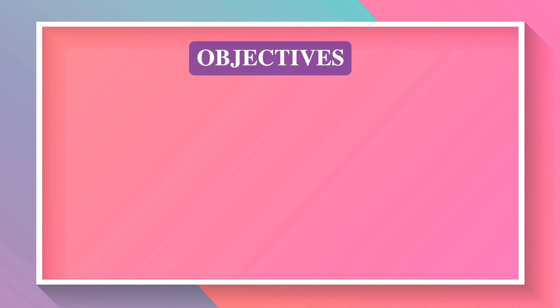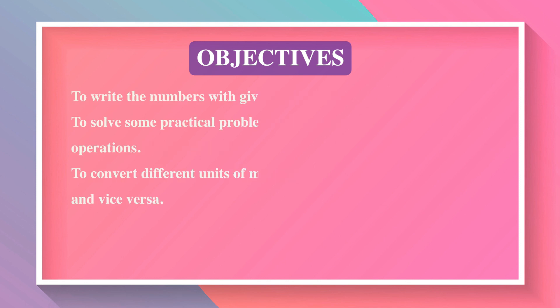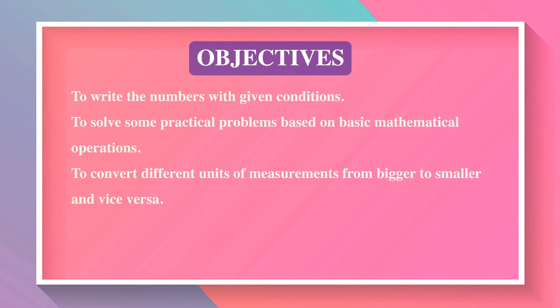The objectives of this session are: to compare the two systems of numeration — Indian and international; to write large numbers in words using commas; to know about place value and write the place value of a given number; to write numbers with given conditions; to solve practical problems based on basic mathematical operations; and to convert different units of measurement from bigger to smaller and vice versa.